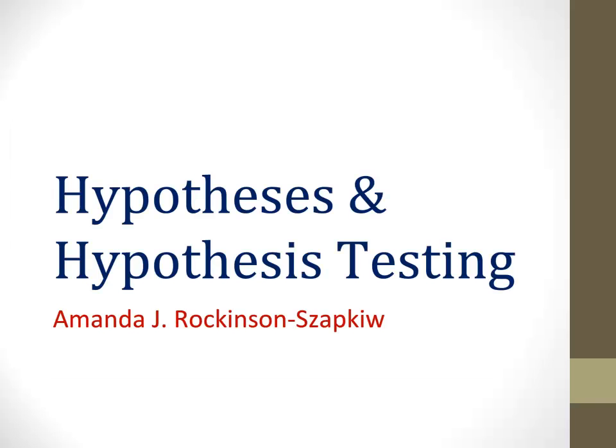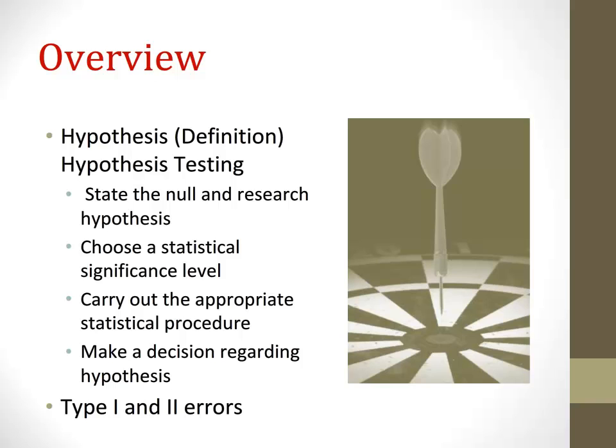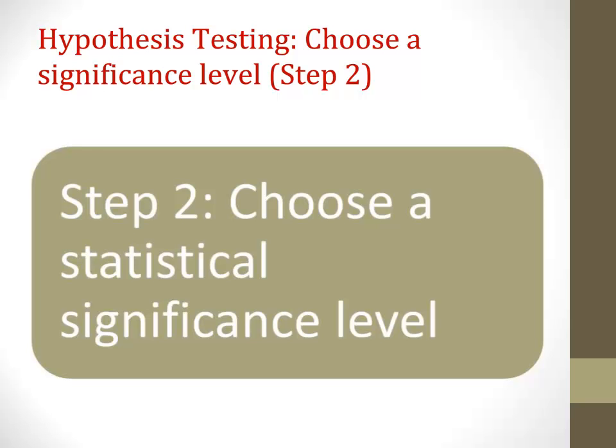Welcome. This is Amanda Rockinson-Zaptu, and in this tutorial we are going to continue discussing hypotheses and hypothesis testing. We're going to look at hypothesis testing steps 2 through 4: choosing a statistical significance level, carrying out the appropriate statistical procedure, and making a decision regarding the hypothesis. We're also going to talk about type 1 and type 2 error.